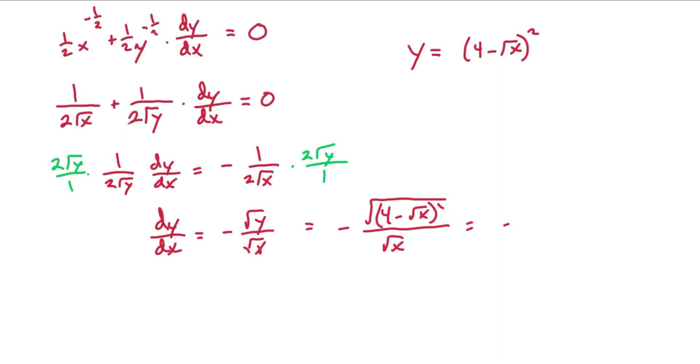And so now we're left with negative 4 minus the square root of x all over the square root of x which we can then simplify to negative 4 over the square root of x plus 1. And notice that's exactly what we got in the previous example.